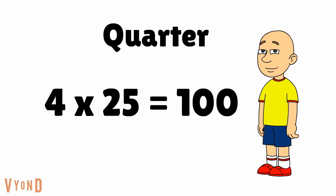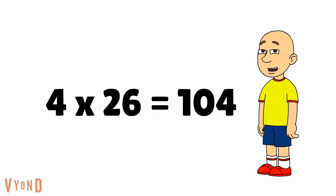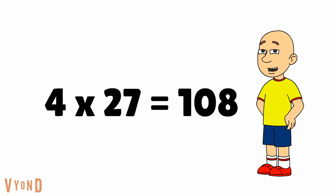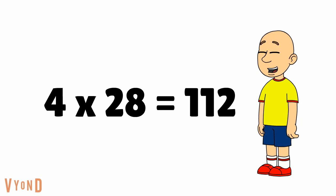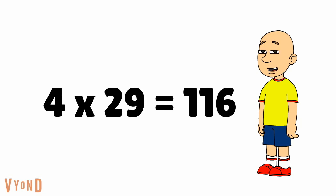Hey guys, we just reached a quarter through. Let's keep going. 4 times 26 equals 104, 4 times 27 equals 108, 4 times 28 equals 112, 4 times 29 equals 116.